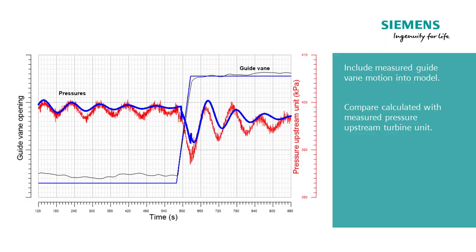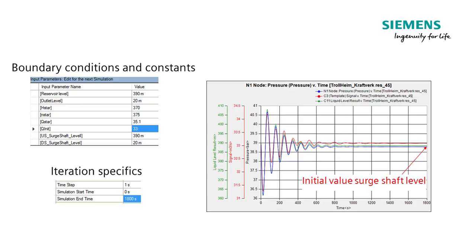We provide the digital model with the input, then we do our calculation and compare with the measured output — the reference output. Once we have established confidence between the two, then we also have confidence in the calculation for the remainder of the system.